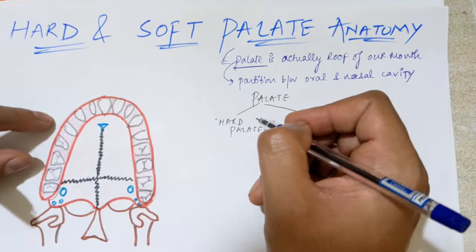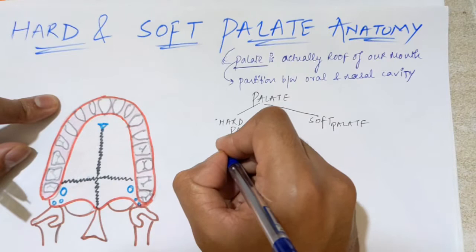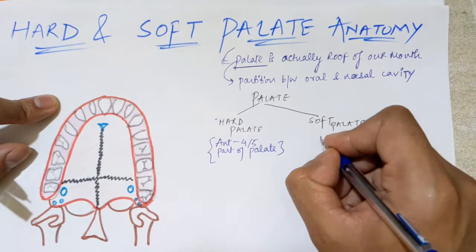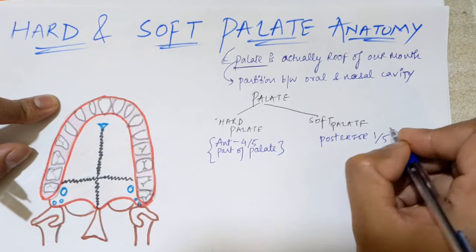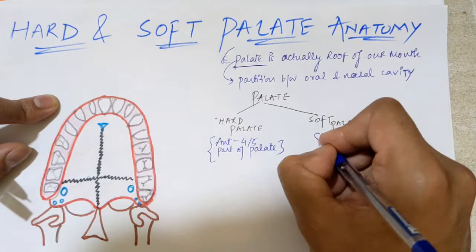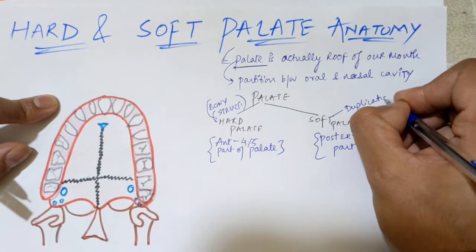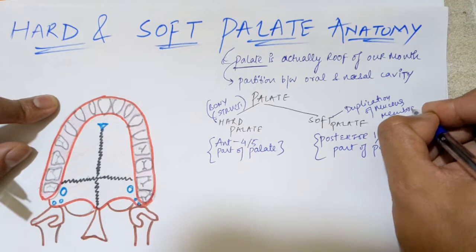Now, how much of the palate is hard and how much is soft? The anterior four-fifths of the palate is the hard palate, and the posterior one-fifth is the soft palate. The hard palate is formed of bony structure, and the soft palate is formed of a duplication of mucous membrane.